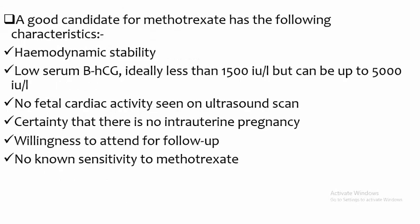A good candidate for methotrexate has the following characteristics: hemodynamically stable; low serum beta-hCG, ideally less than 1,500 international units but can be up to 5,000 international units; no fetal cardiac activity seen on ultrasound scan; and confirmation that there is no intra-uterine pregnancy.